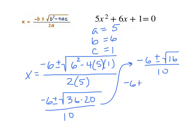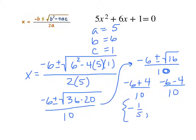So that's negative 6 plus 4 over 10, and negative 6 minus 4 over 10. We use the plus or minus because it gives us the two different solutions — a quadratic equation having degree of 2 has two solutions. Negative 6 plus 4 is negative 2, so negative 1/5 is one solution. Negative 6 minus 4 is negative 10 over 10, which is negative 1. There are our two solutions using the quadratic formula.